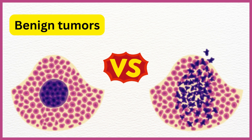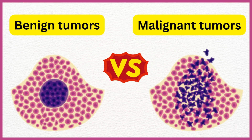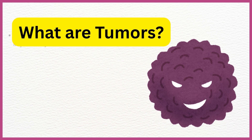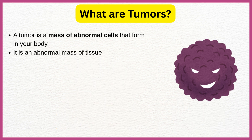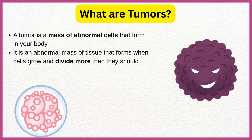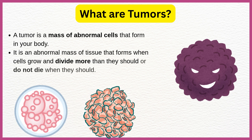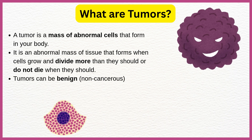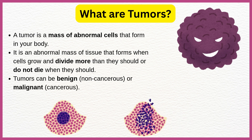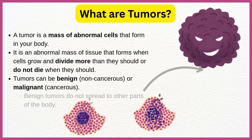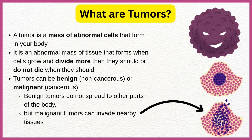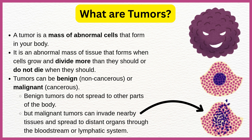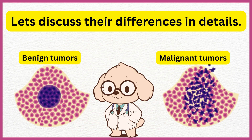Benign Tumors vs. Malignant Tumors. A tumor is a mass of abnormal cells that form in your body. It is an abnormal mass of tissue that forms when cells grow and divide more than they should, or do not die when they should. Tumors can be benign, non-cancerous, or malignant, cancerous. Benign tumors do not spread to other parts of the body, but malignant tumors can invade nearby tissues and spread to distant organs through the bloodstream or lymphatic system. Let's discuss their differences in detail.